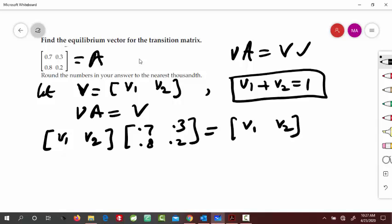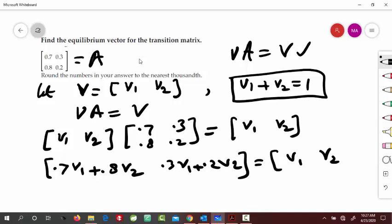And we have to just solve this equation now. So, when we multiply the left side, so we would get, like, say, 0.7v1, plus 0.8v2. And 0.3v1, plus 0.2v2. So, this product equal to this one. And on the right side, we have v1, v2.